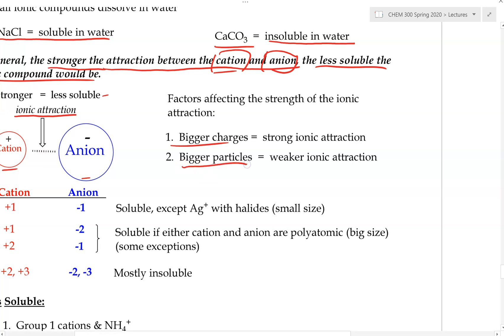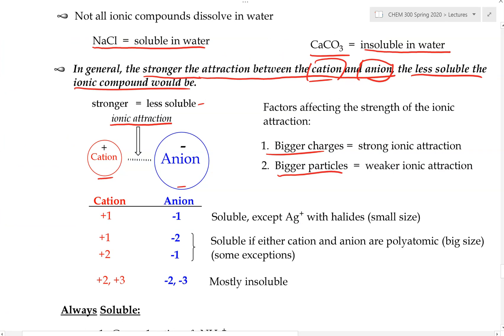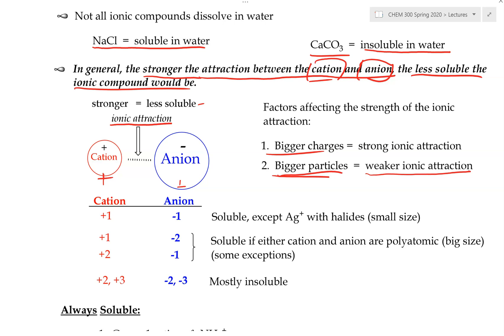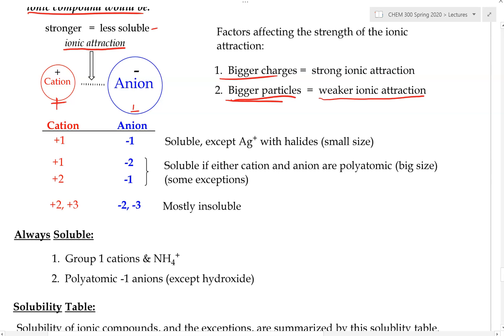The second factor is particle size. The bigger the size of the cation and anion, the weaker the ionic attraction, because larger ions are farther apart and cannot get as close together. Smaller ions get very close and attract more strongly. So: bigger particle → weaker attraction → more soluble. By looking at charges and sizes, we can predict whether an ionic compound will be soluble or insoluble.